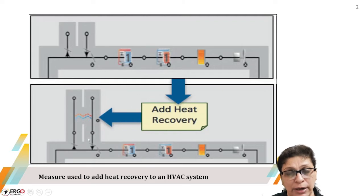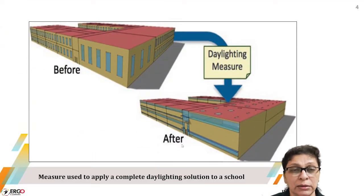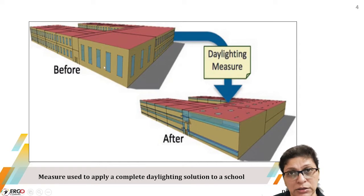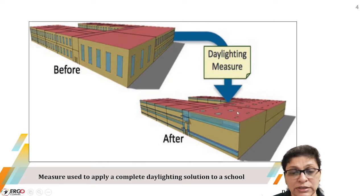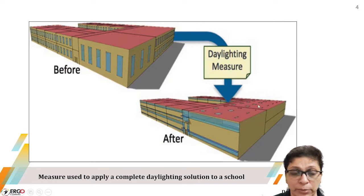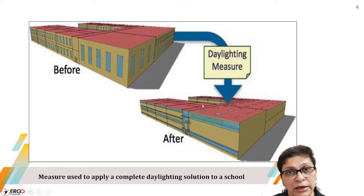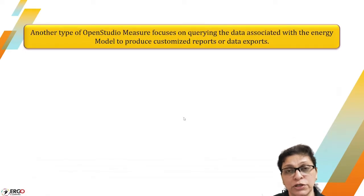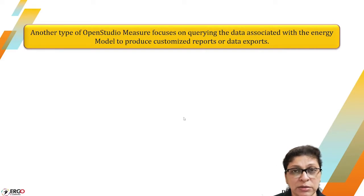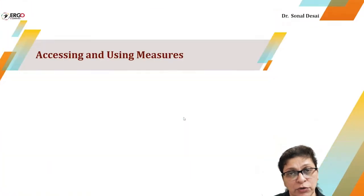Another energy saving measure shown in this image is applying a daylight control measure. One case shows no daylight control, while the other shows daylight being utilized — the model has automatically adapted light sensors and applied skylights at the roof. The skylights are present in the gym but not in the classrooms, where they might hamper work. Similarly, many other built-in energy saving measures exist, and users who wish to can write their own code in Ruby language and implement it.